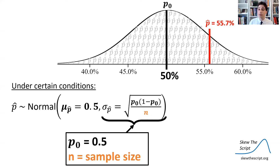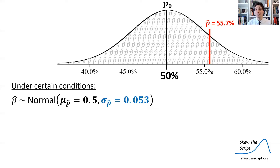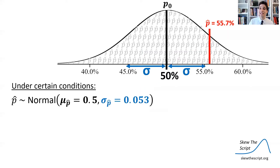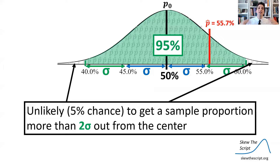So that means that typically, the proportion of times we'd see the home team win varies from 50% by about 5.3% — that's our standard deviation. Recall the 68-95-99.7 rule of normal curves. This means that 68% of the time we'd see home team winning percentages within one standard deviation of 50%, and 95% of the time within two standard deviations of 50%. It's unlikely to see something beyond two standard deviations from 50% in this assumed world. Once you get two standard deviations out from the center, it's unlikely to see that, and so we might start thinking differently about our null assumption.